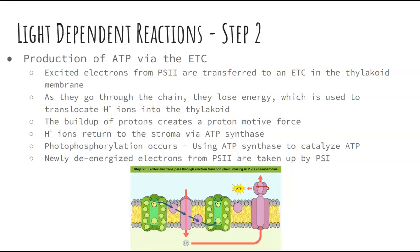The excited electrons from PS2 are transferred to an electron transport chain (ETC) in the thylakoid membrane. As they go through that chain, they lose energy, which is used to translocate hydrogen ions into the thylakoid. This is exactly what happens in cellular respiration — the electrons become de-energized. The buildup of protons creates a proton motive force. The hydrogen ions return to the stroma via ATP synthase, producing ATP. So photophosphorylation occurs, and the de-energized electrons from PS2 are taken up by PS1.